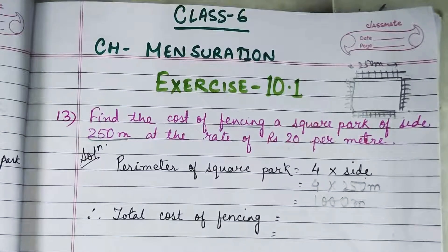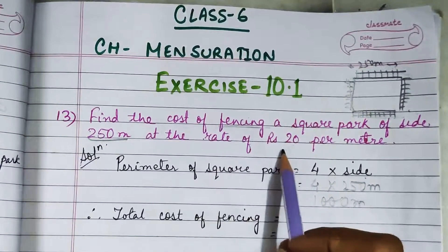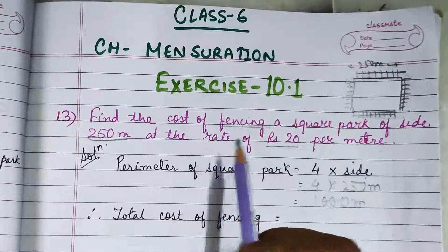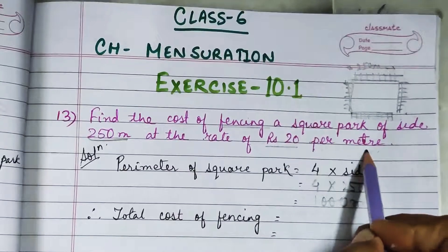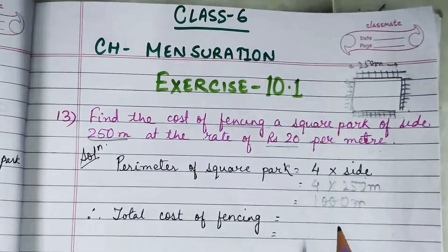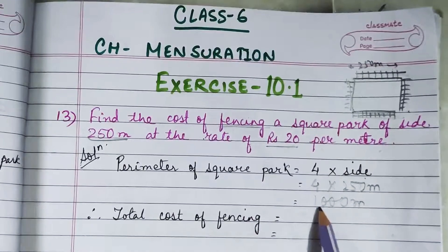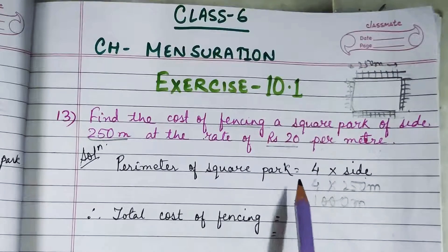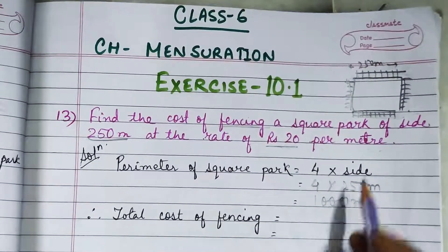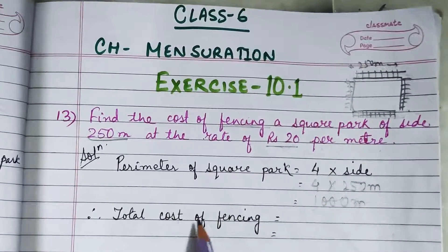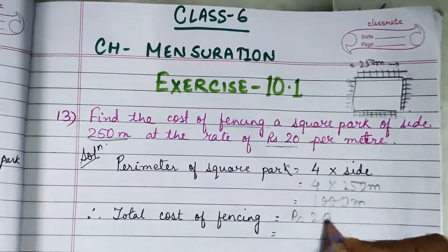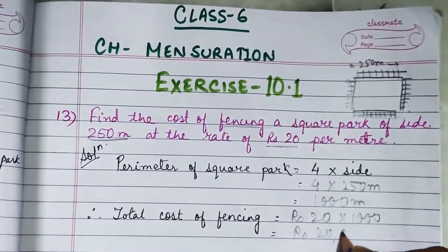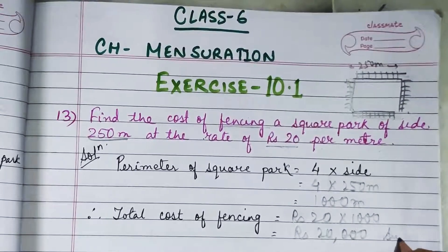The rate of fencing is given as rupees 20 per meter. So if the cost is rupees 20 for 1 meter, we need the total cost for 1000 meters. We multiply rupees 20 by 1000, giving a total cost of fencing equal to rupees 20,000. This is the answer.